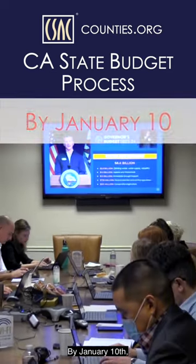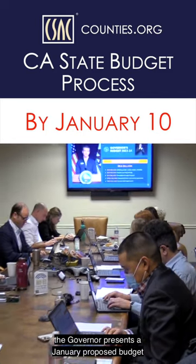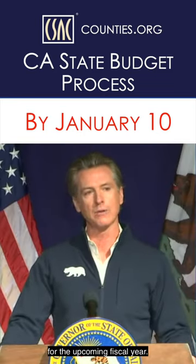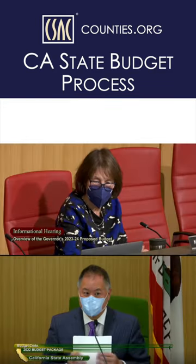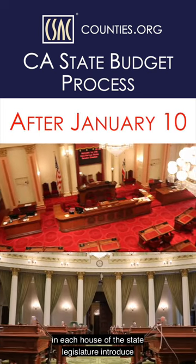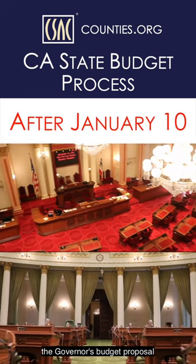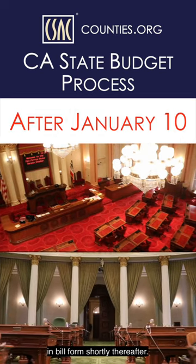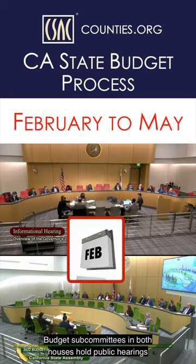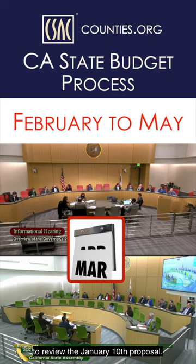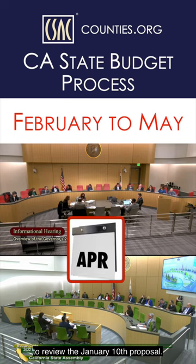By January 10th, the Governor presents a January proposed budget for the upcoming fiscal year. The Budget Committee Chairs in each House of the State Legislature introduce the Governor's budget proposal in bill form shortly thereafter. Budget Subcommittees in both Houses hold public hearings from February to early May to review the January 10th proposal.